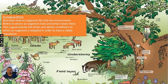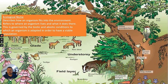Ecological niche. This describes how an organism fits into the environment — where an organism lives and what it does there. It is governed by the biotic and abiotic conditions to which an organism is adapted in order to have a viable population. For example, the green woodpecker lives in a tree — this is an oak tree — and its niche is governed by biotic factors such as competition with other woodpeckers for insects, and abiotic conditions such as shade. Food is also really important for the woodpecker because it's quite a large species.